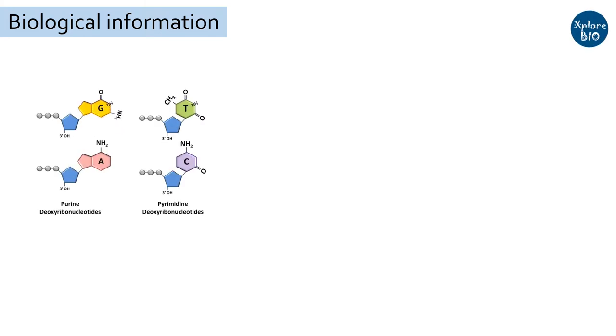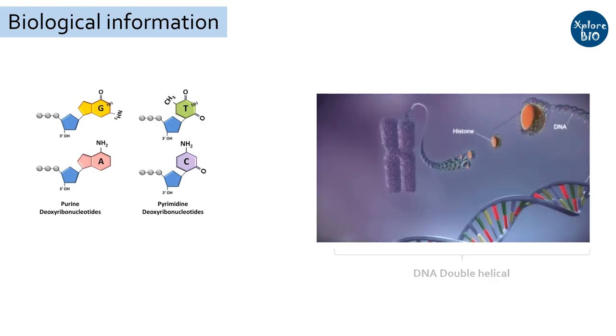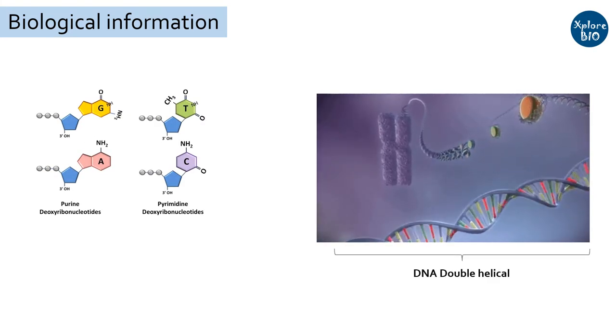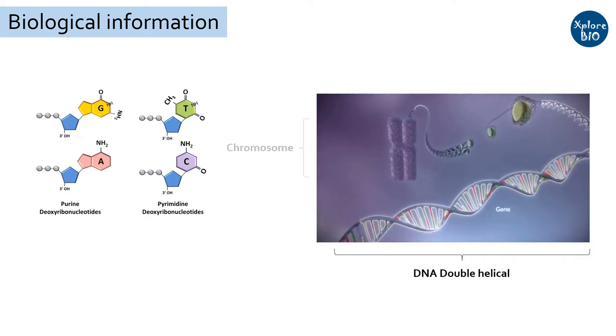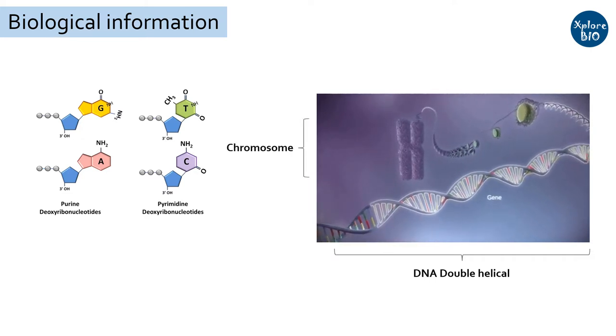Our DNA or genome is nothing but biological information written with four chemical bases or nucleotides. These are more commonly seen as a compact and organized structure with proteins called chromosomes.